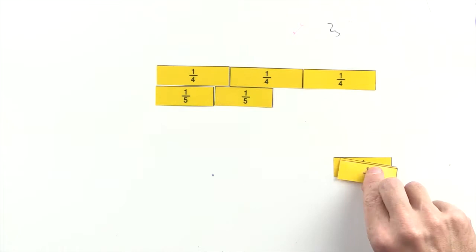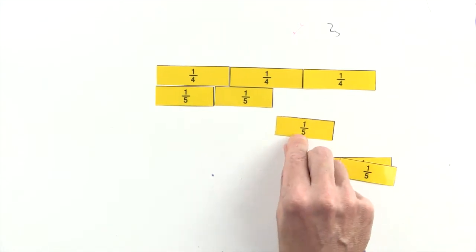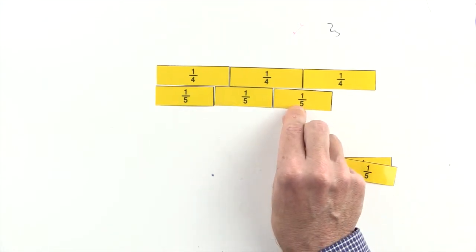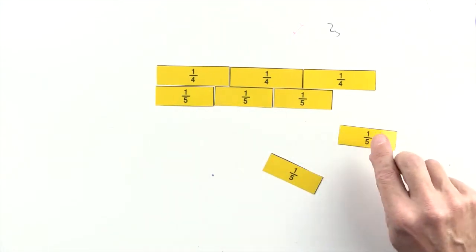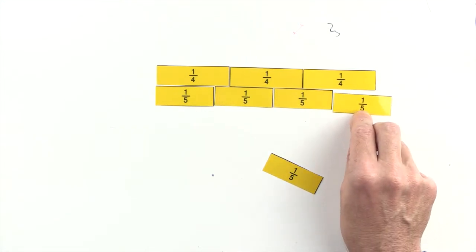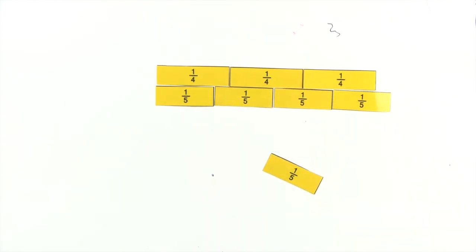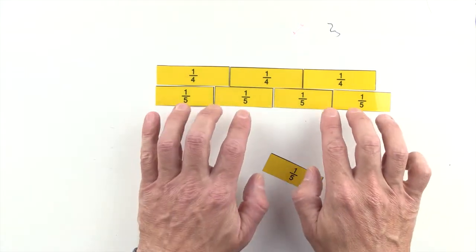Three fifths are less than three quarters, and four fifths are greater than three quarters. So we can't use fifths to make an equivalent fraction to three quarters.